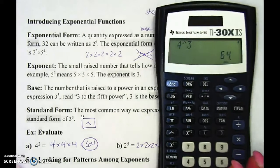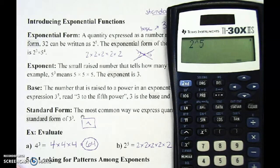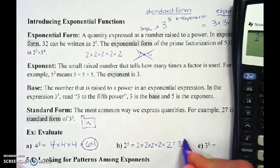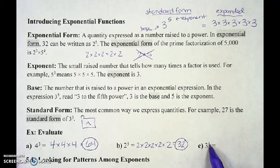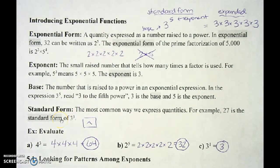My calculator shortcut, instead of typing all those out, is 2 caret 5, which gives 32. Also, anything to the first power is itself — so 3 to the first power is simply 3. Anything to the first power means I just had one of those, so it'll be that exact same number.